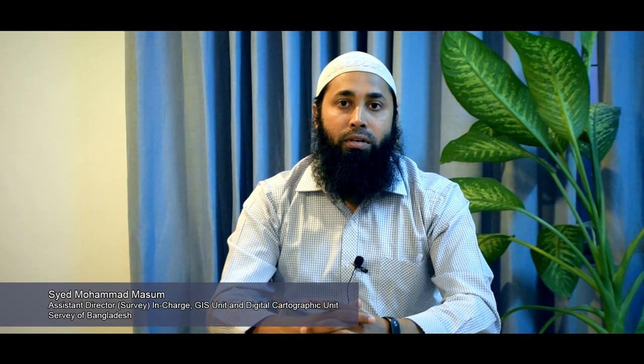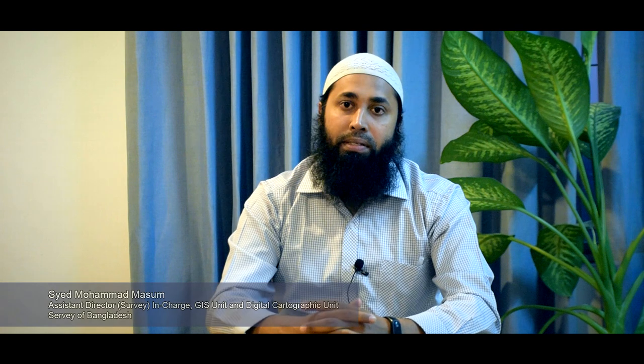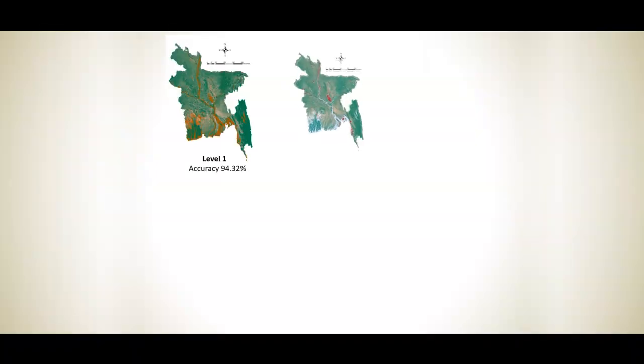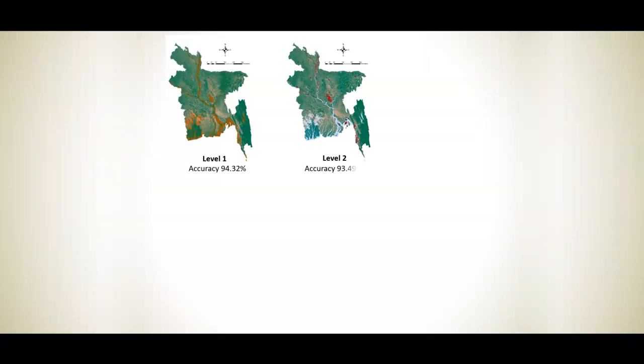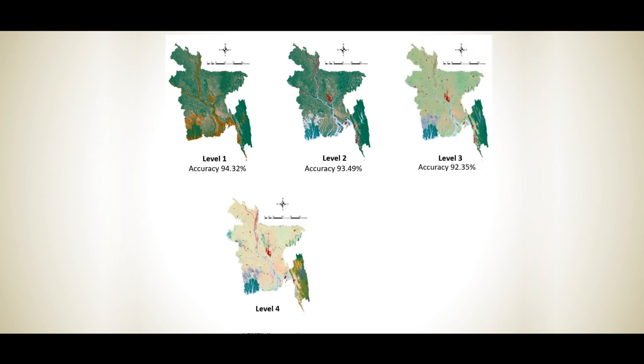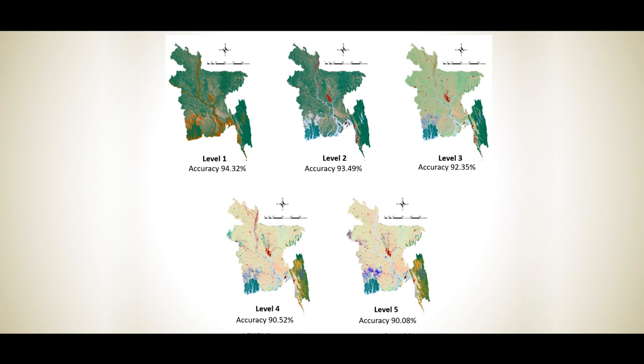Quality checking was an integral part of the whole production chain of Land Cover Map development. Accuracy assessment was conducted at more than 14,000 locations using a pseudo-ground truth validation technique. Overall accuracies of 90 to 94% were achieved for classification at the national, district, and other geographic levels.